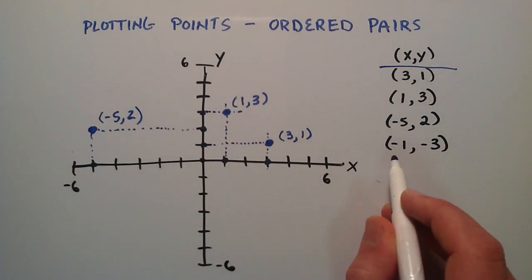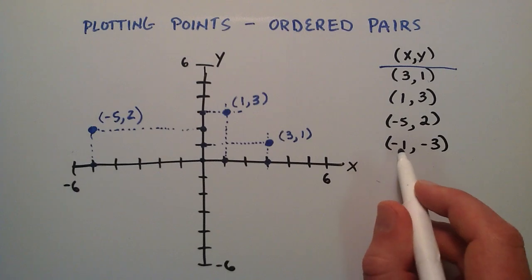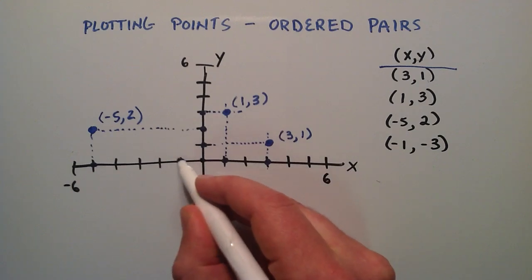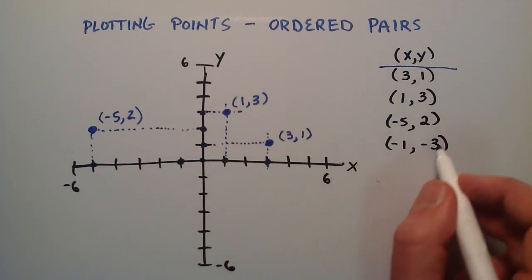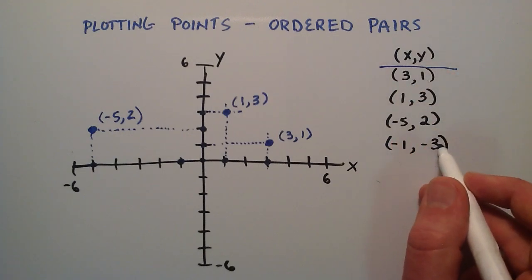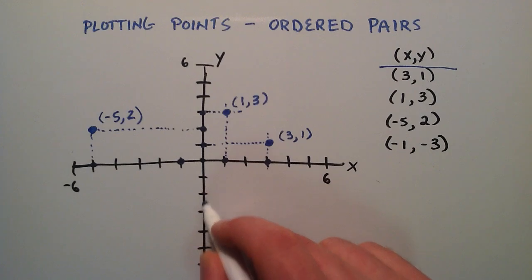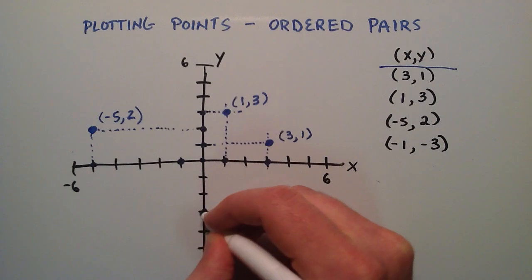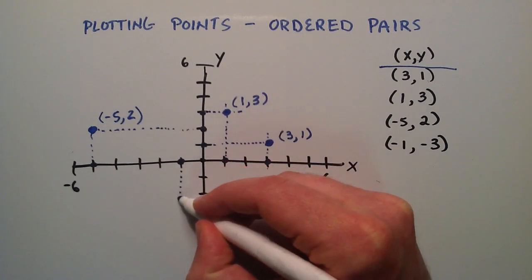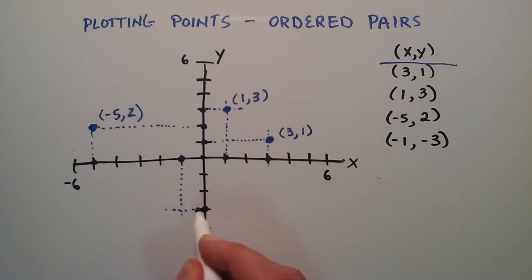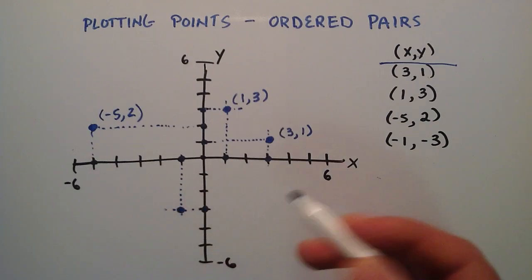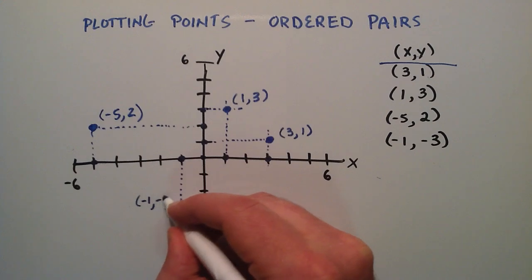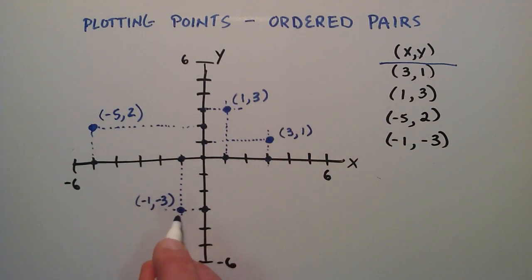Let's do this last one now. Our X component is negative 1, so on the X axis we go over negative 1. And then our Y component for this point is negative 3, so we start at the origin and go down 3 units in the negative Y direction. Then we draw our projections off of those two as well, and where those cross is our point represented by the ordered pair negative 1, negative 3.